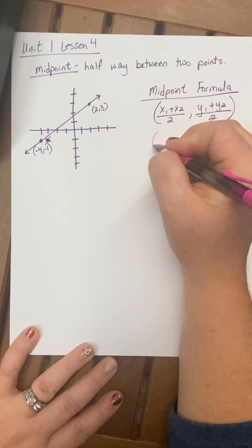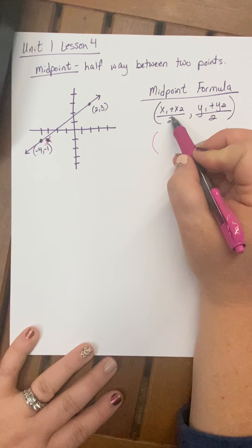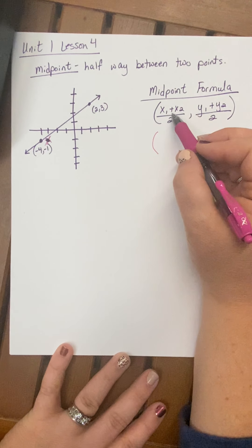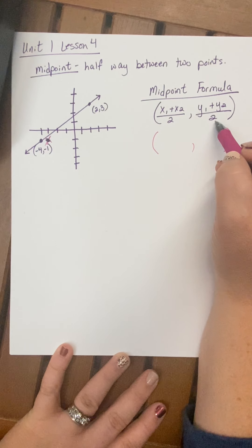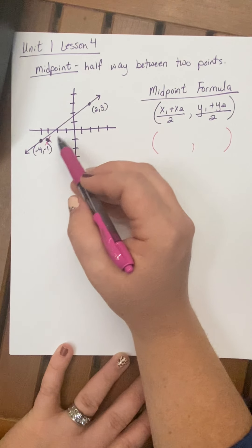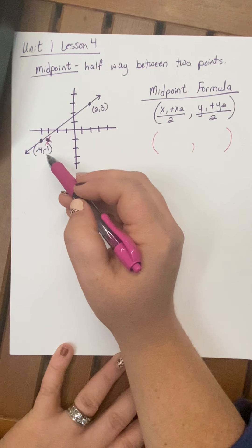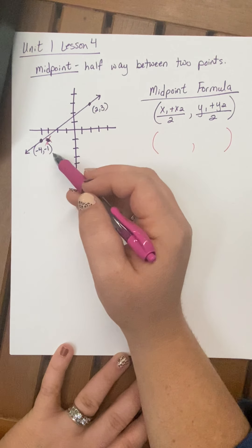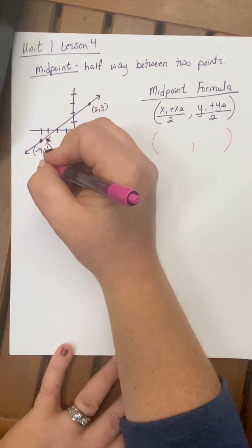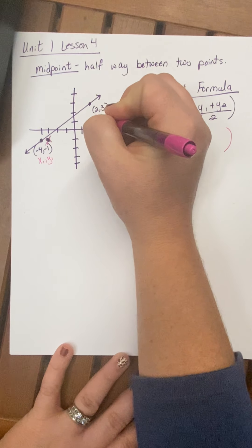Okay, so I have my formula, x1 plus x2 divided by 2 to get my x coordinate, and y1 plus y2 divided by 2 to get my y coordinate. So these are my two ordered pairs that I have, and I need to choose which one I want to be my point 1 and which one I want to be my point 2. It really doesn't matter which one you're going to use as 1 and 2.